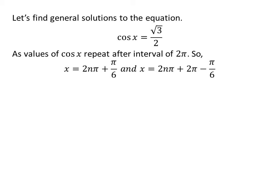Let us find the general solutions for the equation cosine of x is equal to square root of 3 upon 2. As we know the values of cosine of x repeat after the interval of 2 times pi, so the general solutions are 2 times n times pi plus pi upon 6, and 2 times n times pi plus 2 times pi minus pi upon 6, where n is an integer.